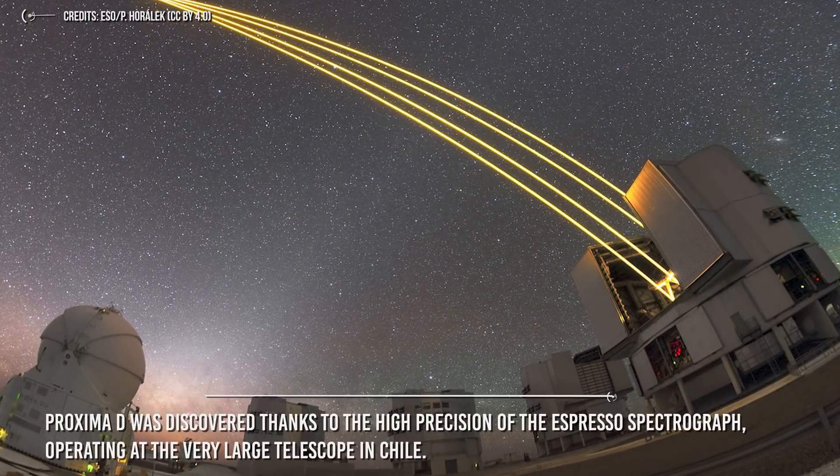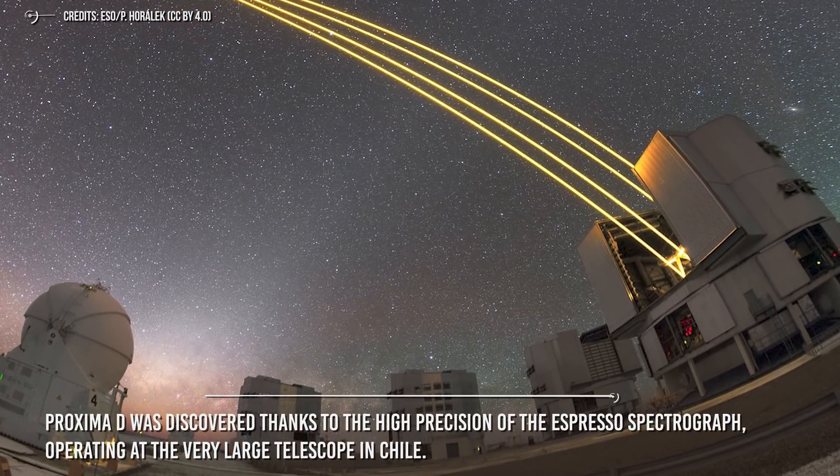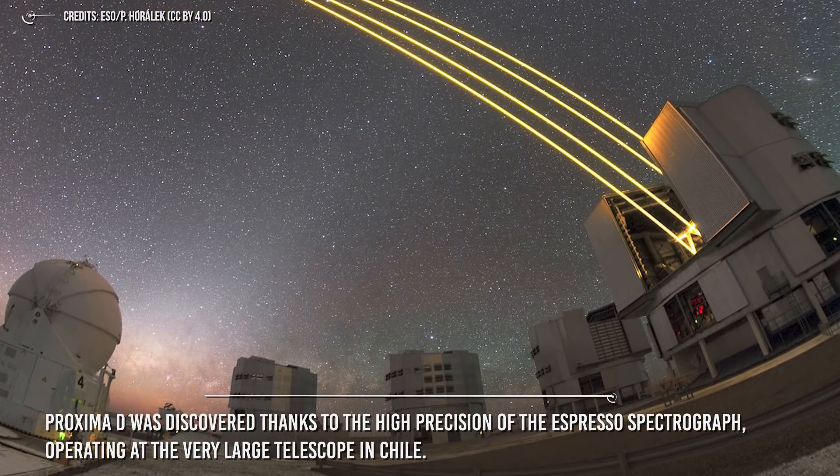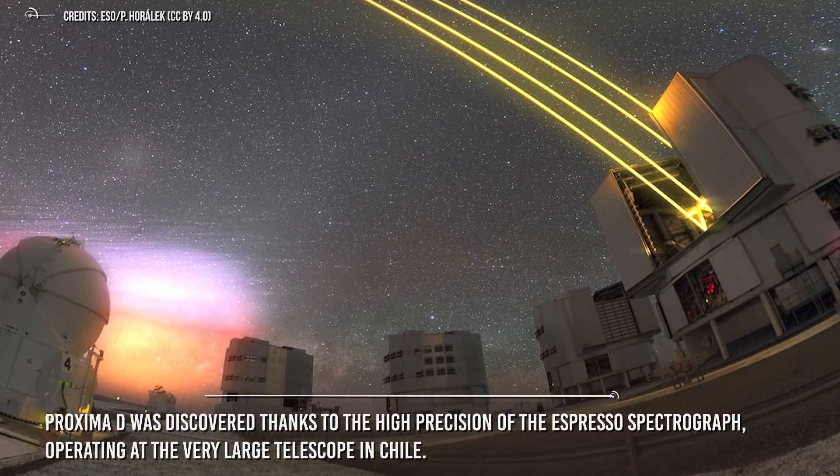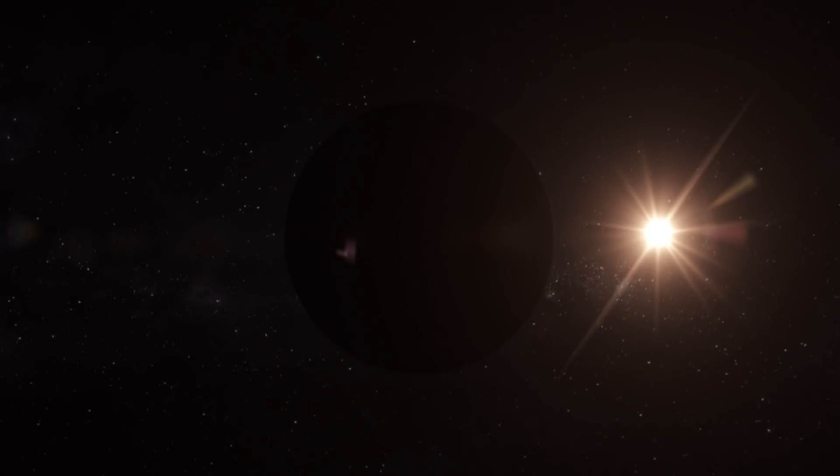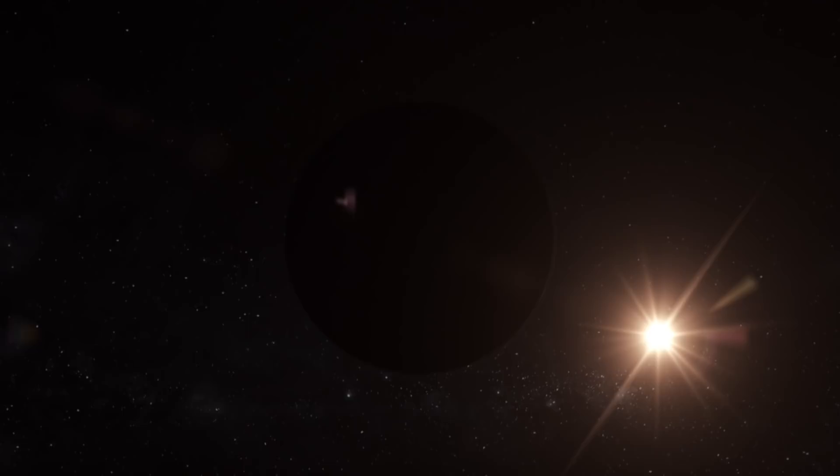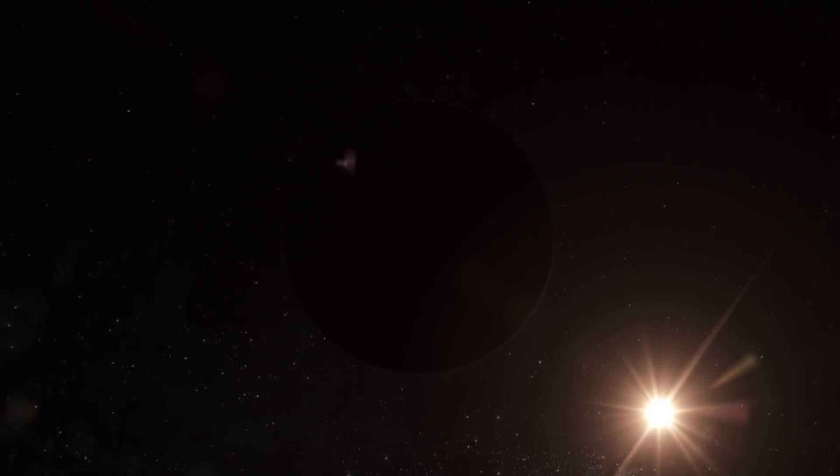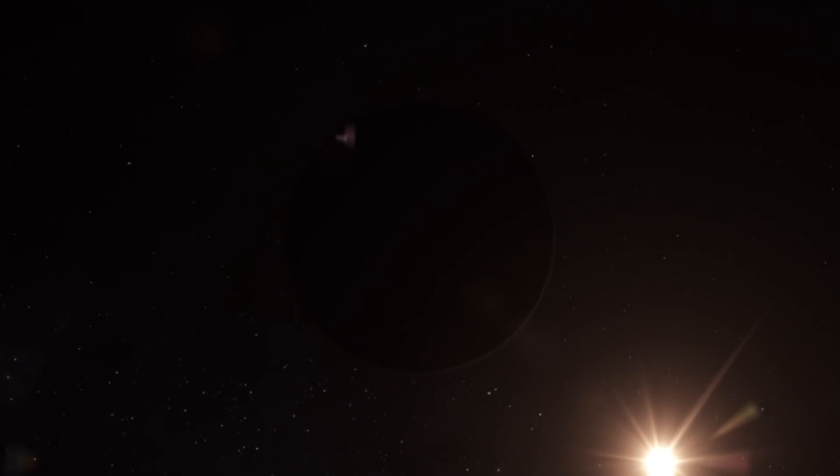Proxima D was discovered thanks to the high precision of the Espresso Spectrograph operating at the Very Large Telescope in Chile. This instrument uses the radial velocity method to identify new planets. It observes variations in the spectrum of a star gravitationally perturbed by the presence of an exoplanet. The perturbation is obviously proportional to the mass of the planet, and in fact, the displacement of Proxima Centauri is extremely small, just 40 centimeters per second, equal to 1.44 kilometers per hour.